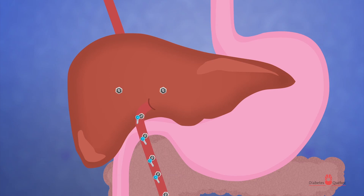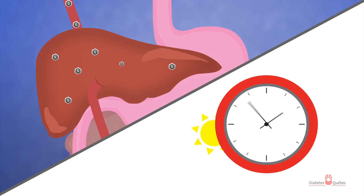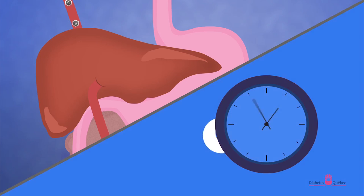Insulin also enables the liver to store glucose. This glucose in the liver is released and used by the body for energy between meals and overnight.